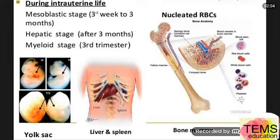In the hepatic stage, after the third month of intrauterine life, the liver is the main organ which forms RBCs. Some erythrocytes are also produced by the spleen and other lymphoid tissues.